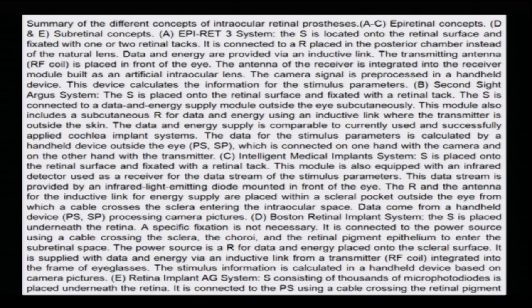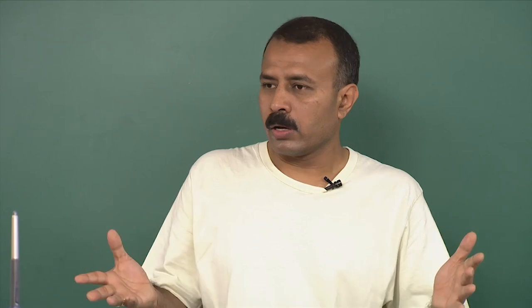Please go through the summary of different concepts of intraocular retinal prosthesis — it could be an epiretinal concept or a subretinal concept. For those interested, there is the Boston Retinal Implant System, Intelligent Medical Implant Systems, and the Second Sight Argus System. These are the different groups who have over the years developed different prosthesis regimes and models.